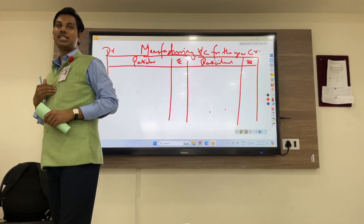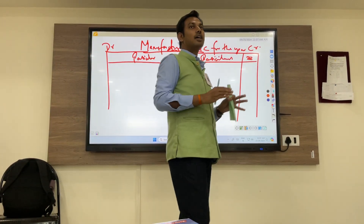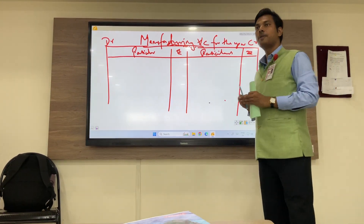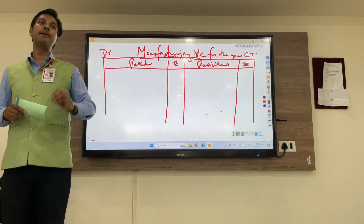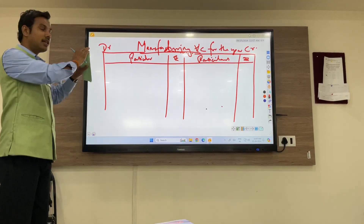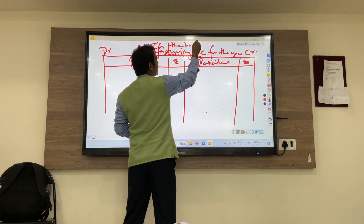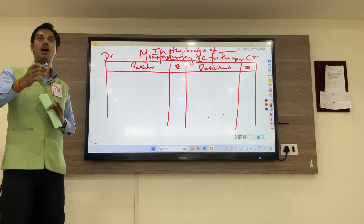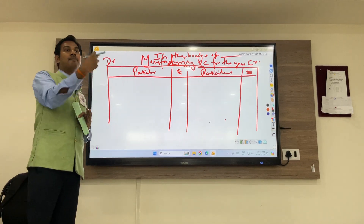Good morning everyone. I am assistant professor Chetan Devashish-Posh and today we are going to solve a sum related to a sole proprietor. We would presume the sole proprietor as a manufacturing unit, and here we have to prepare a manufacturing account. The first thing we should write while solving the sum is in the books of the organization — for example, if they have written in the books of XYZ, that is the name the sole proprietor might have kept.